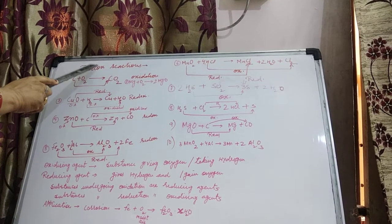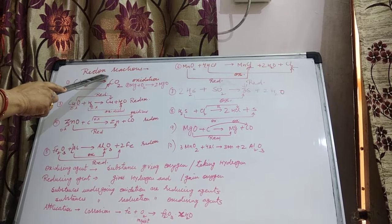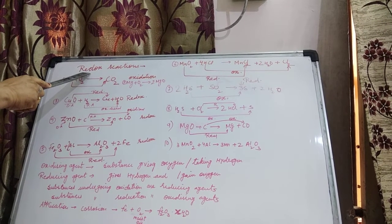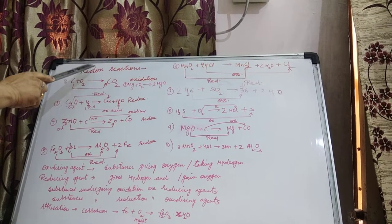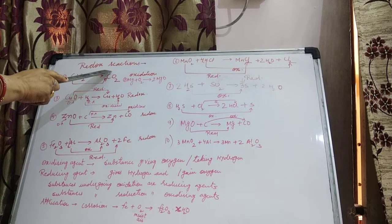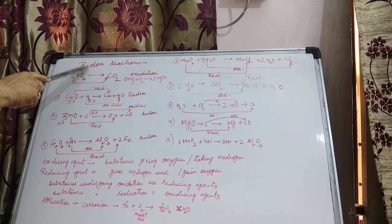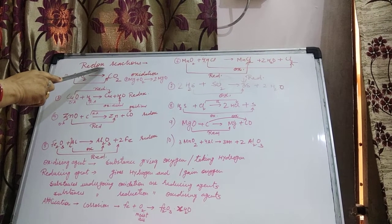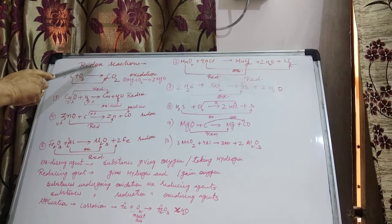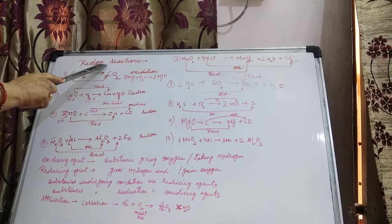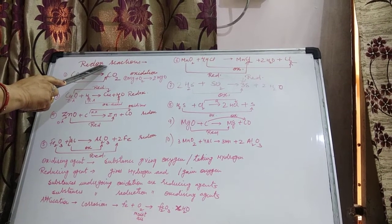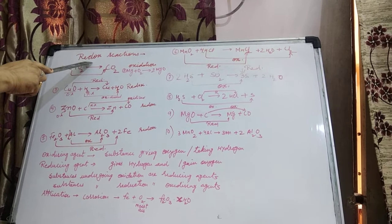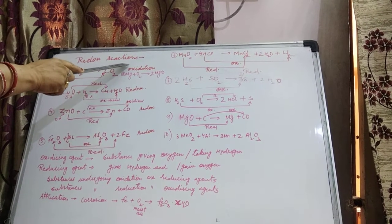Oxidation and Reduction both are taking place together — that reaction we call a Redox reaction. From 'Reduction' we take 'Red', from 'Oxidation' we take 'Ox', so it becomes Redox. Now we are doing examples of Redox reactions.